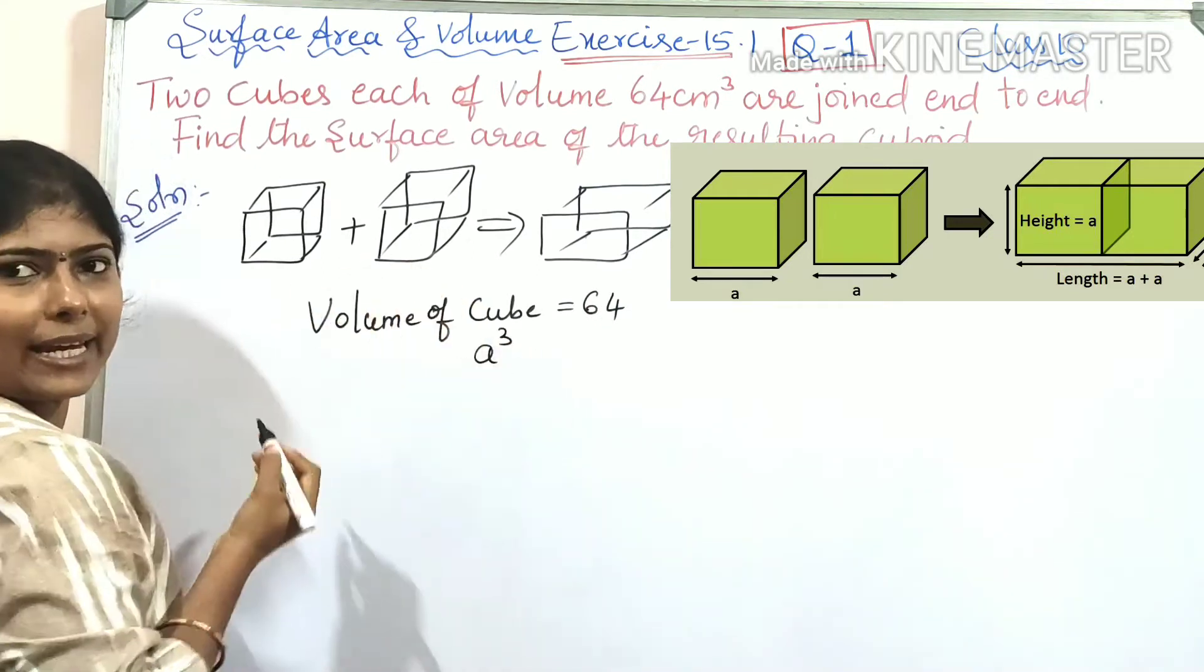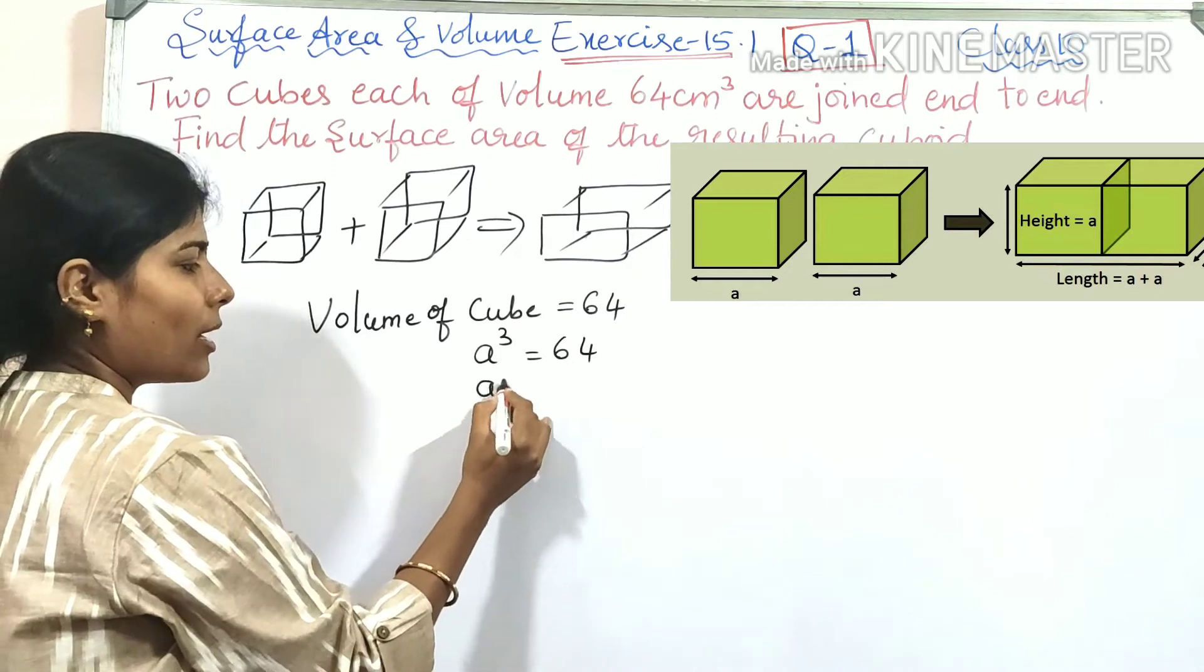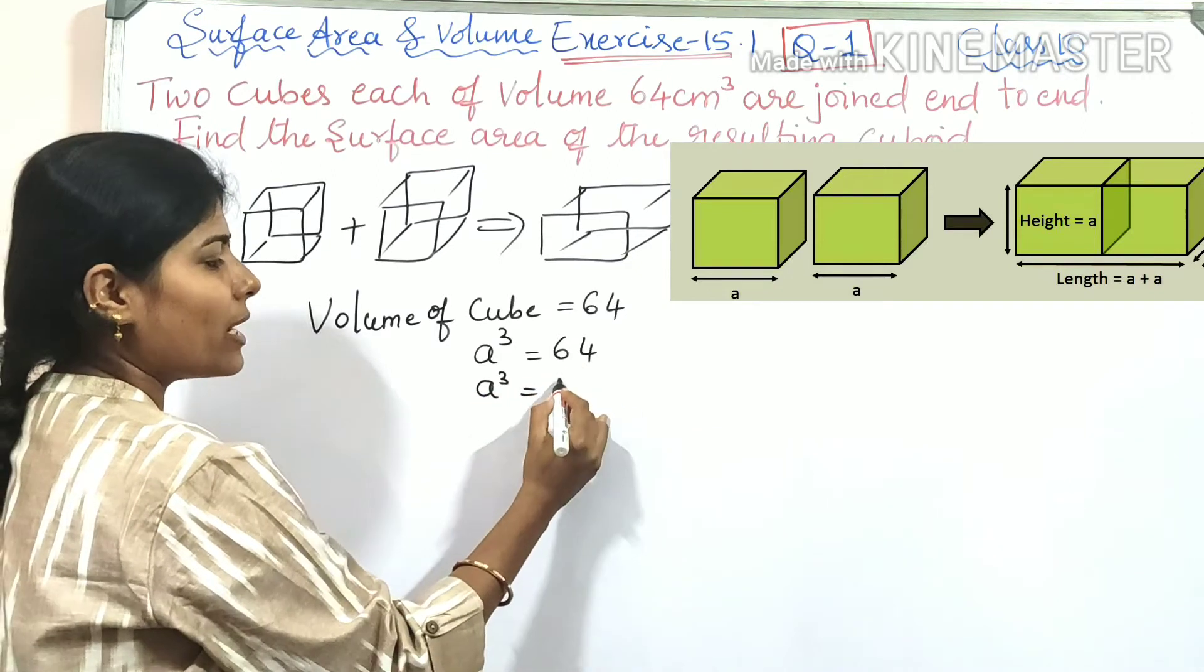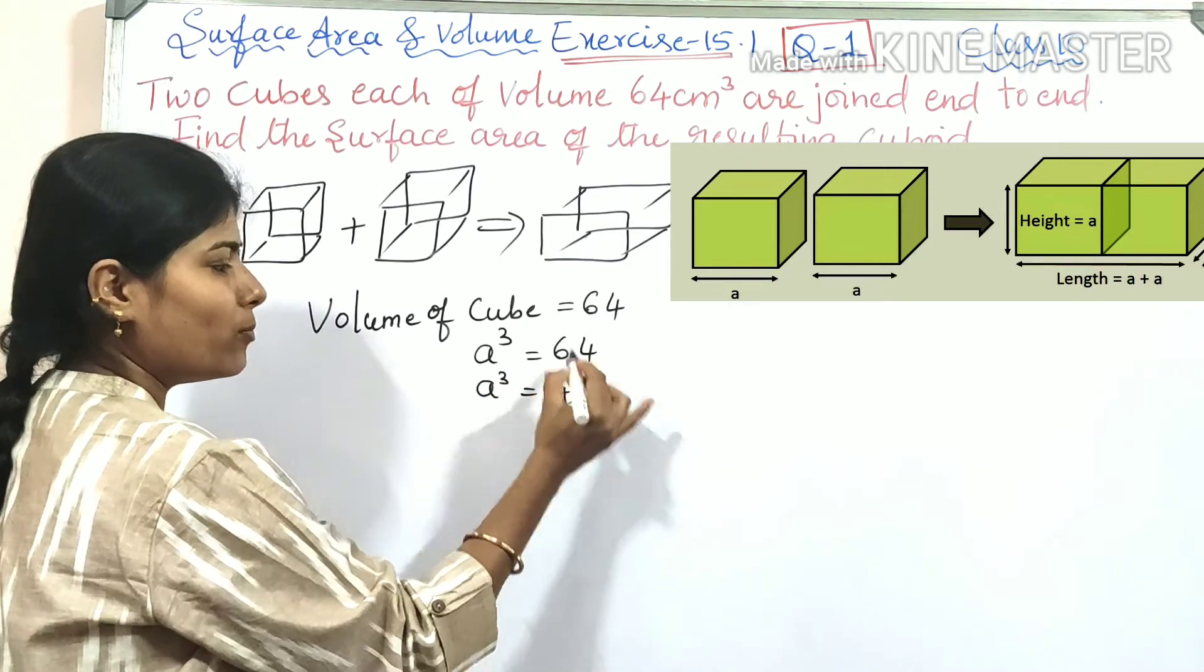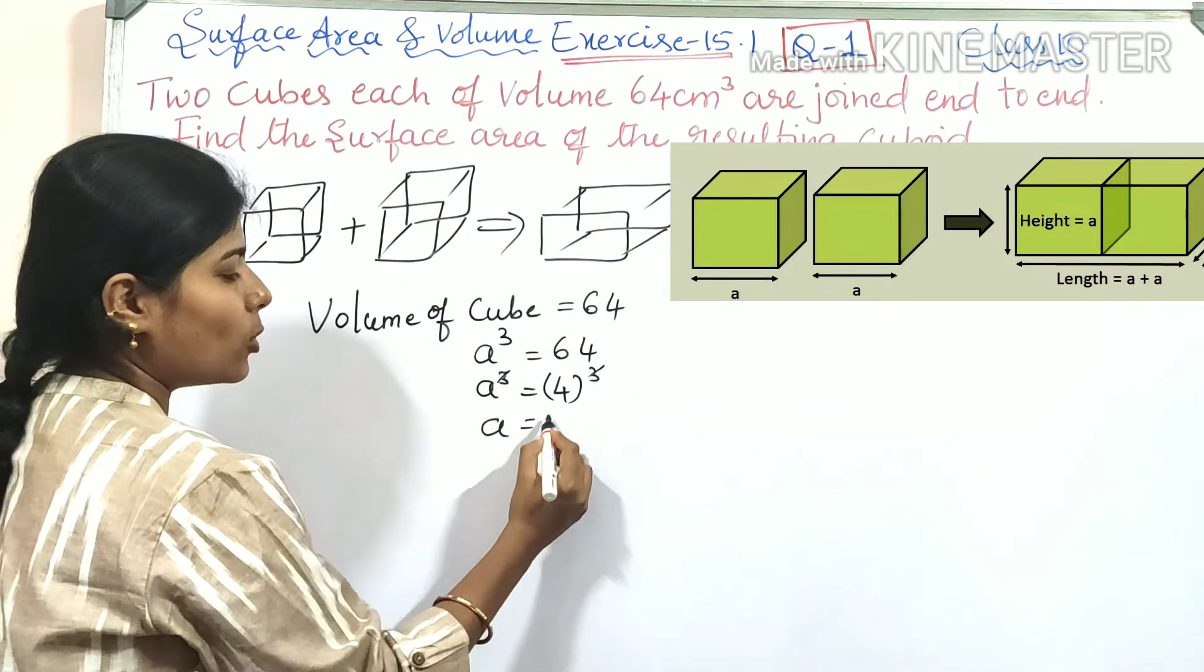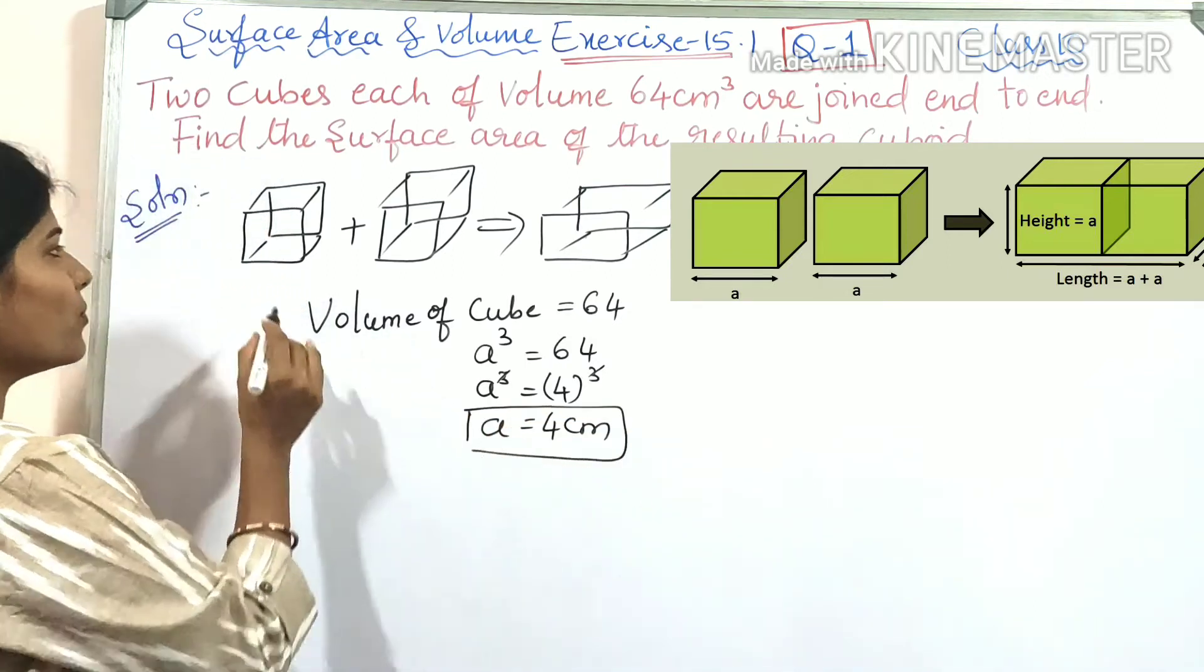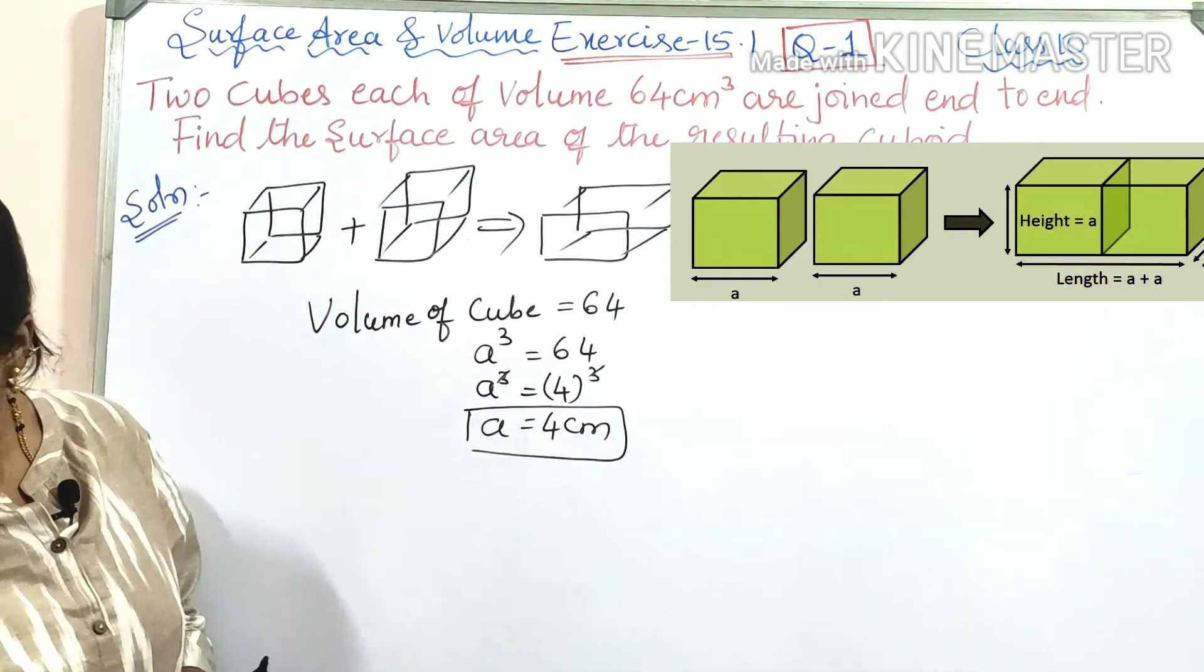a³ = 64. 64 can be written as 4³, so the cube root gives us a = 4 centimeter. We got the side of the cube.